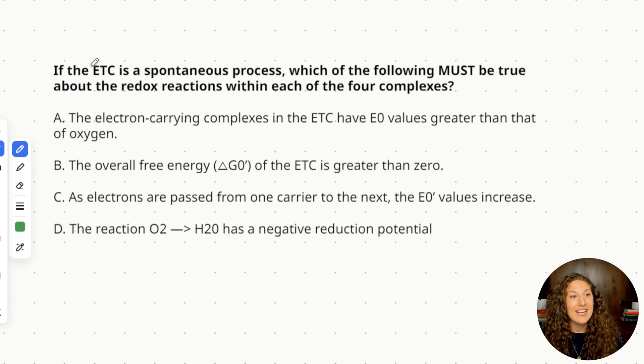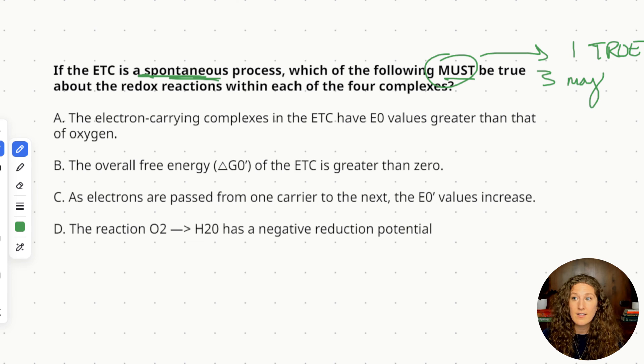All right you know what to do, go ahead and pause this video try it on your own and then we'll walk through how to approach this question together. All right they're telling us if the ETC the electron transport chain is a spontaneous process which of the following must be true about the redox reactions within each of the four complexes. Okay with a must be true question I always like to say okay one of these has to be true so one true and then three of these answers are either maybes or false. So we need something that's a hundred percent true based on the information provided and three of these answers are either going to be like iffy or false so we're going to go through and do a strong elimination strategy here but we've got a little prediction where we know things about spontaneity. We know the overall delta G needs to be less than zero the overall E cell needs to be greater than zero. We already know some things about this setup just from the word spontaneity or spontaneous.